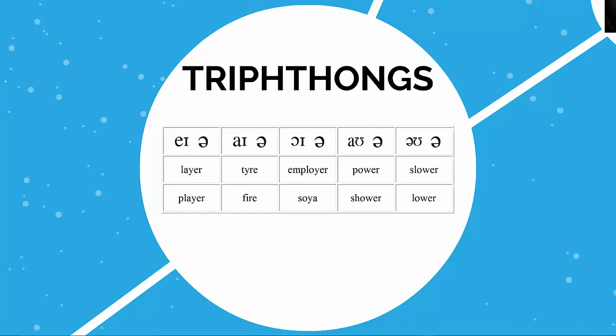For eɪə you have layer, player. For aɪə you have tire, fire. For ɔɪə you have employer, loyal. For aʊə you have power or shower, and for əʊə you have slower or lower.